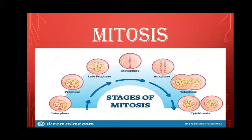After prophase, the cell enters metaphase. In metaphase, the chromosomes get attached to the spindle by their centromere. As you can see in the diagram, the chromosomes line up in one plane at the equator. This is the key feature of this phase — you can easily identify this stage because the chromosomes are lined up in one plane at the equator.